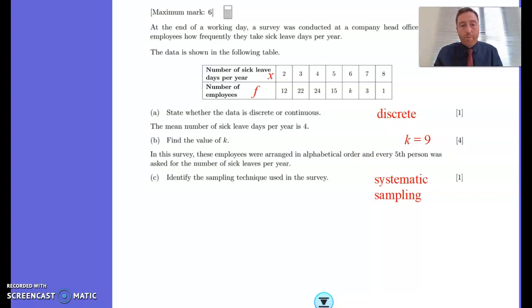On to the last part. This is pretty straightforward. The sampling technique, in alphabetical order, every fifth person, that's called systematic sampling. You should take every fifth, tenth, whatever it is, from an ordered list.